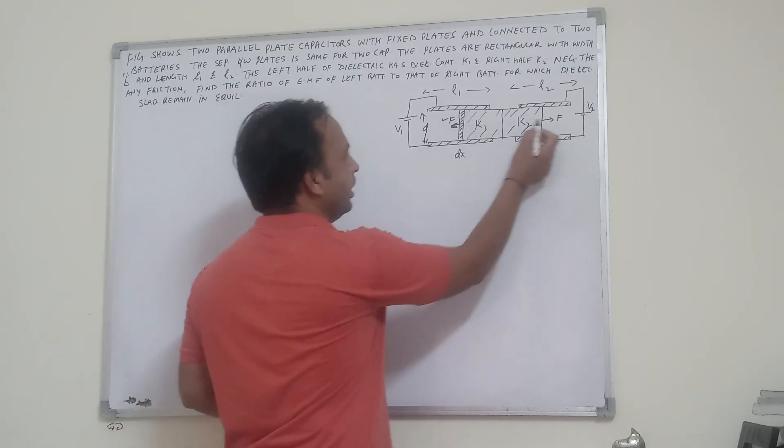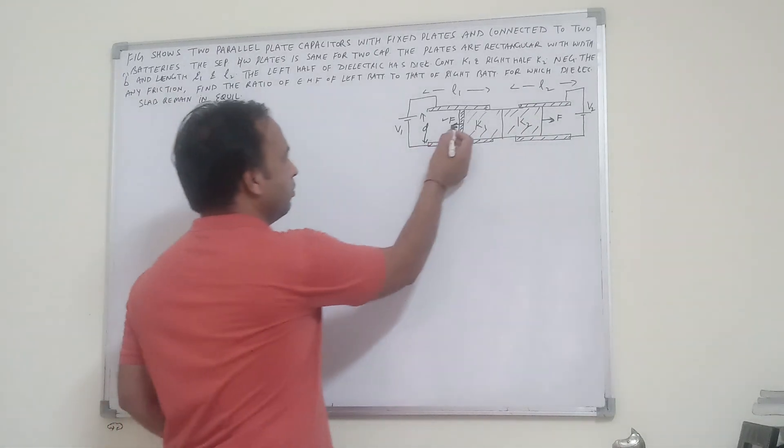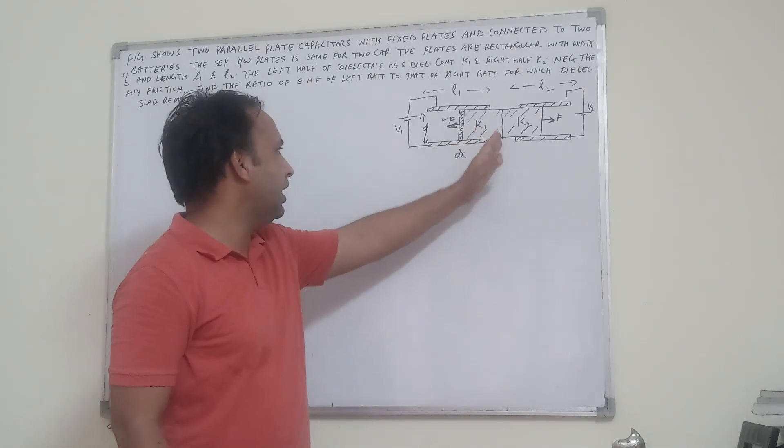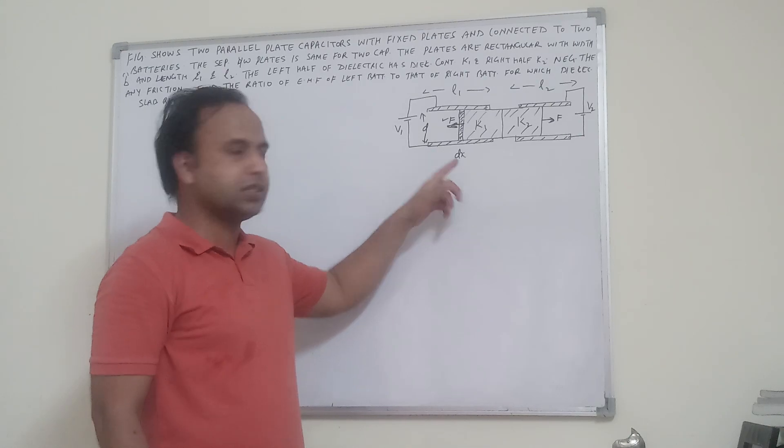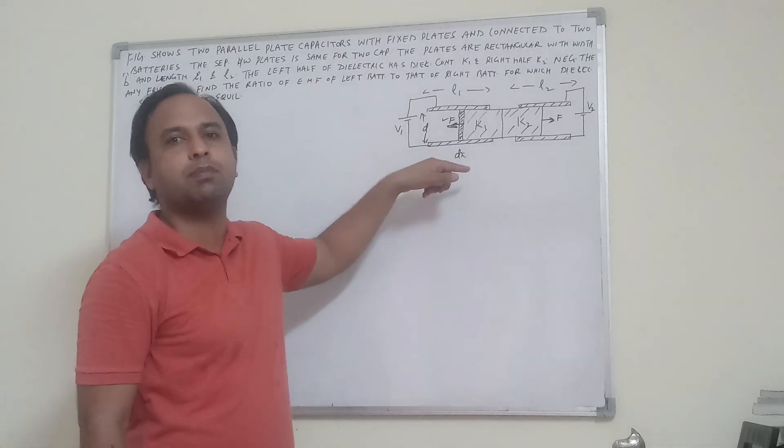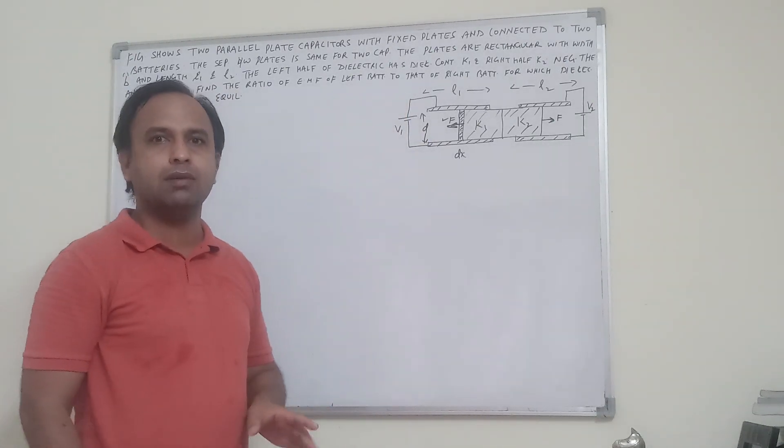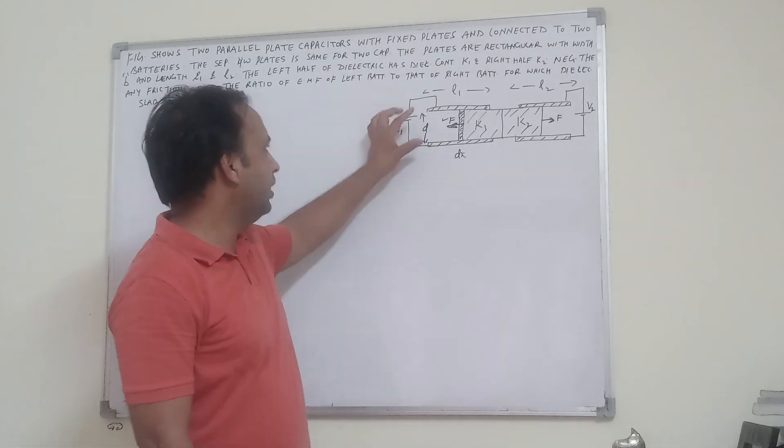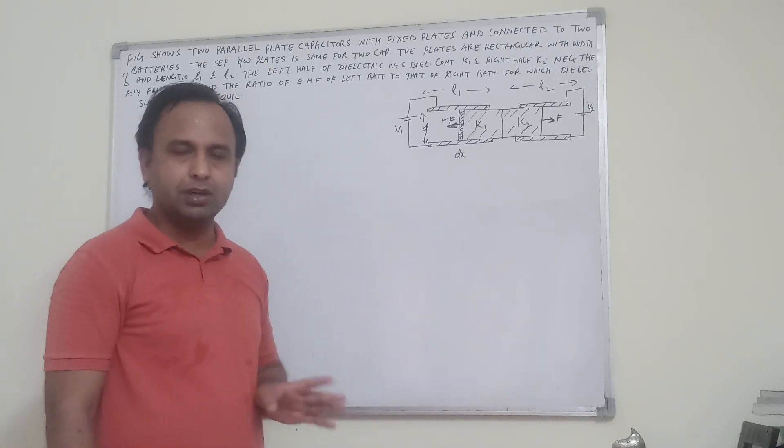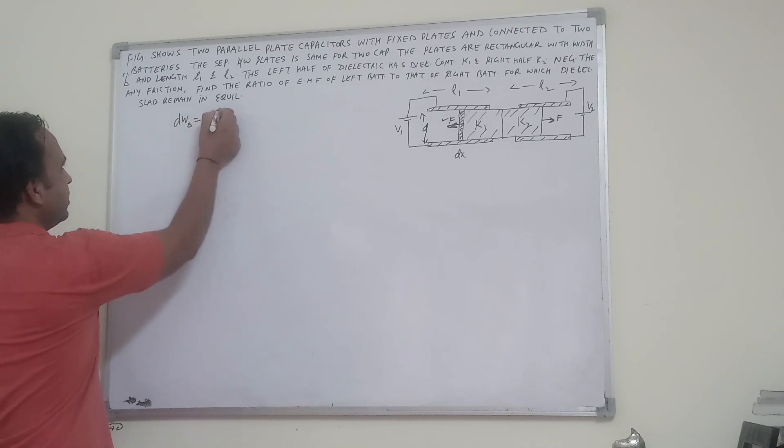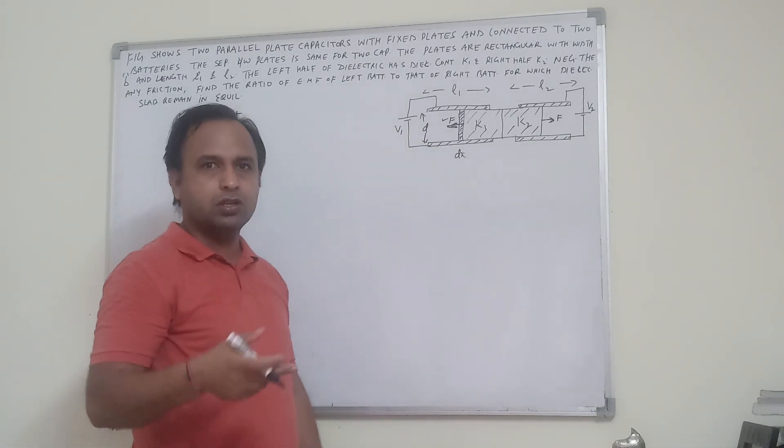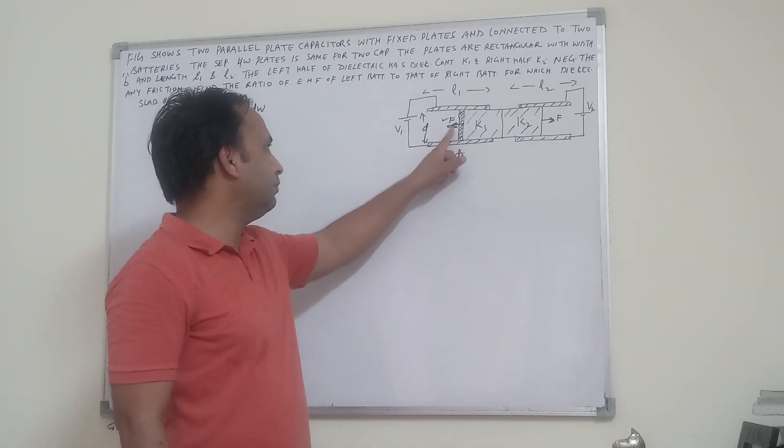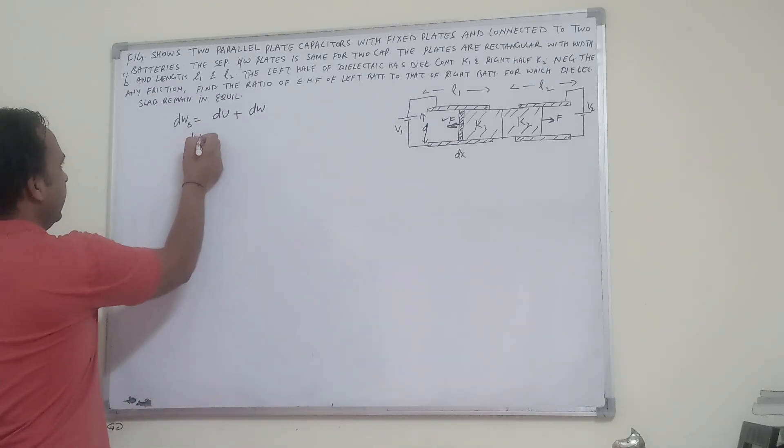In equilibrium, the forces will be equal and opposite. The battery work equals the change in energy plus the work done. The work done is the battery work, which is charge transferred dq times voltage.